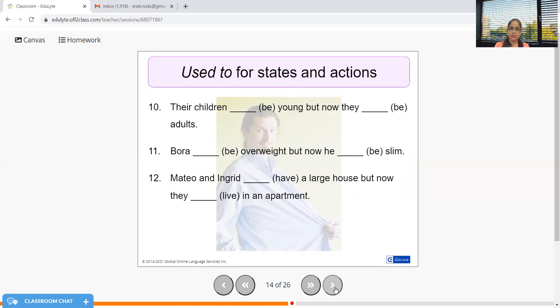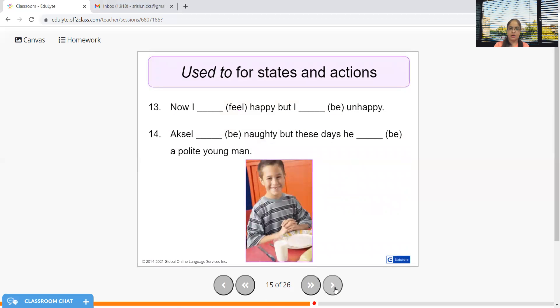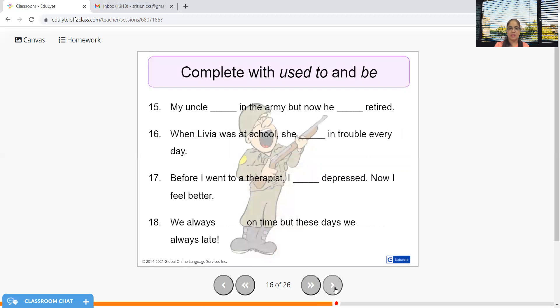Mateo and Ingrid used to have a large house but now they are living or they live in an apartment. Now I feel happy but I used to be unhappy. Axel used to be naughty but these days he is a polite young man - yes, he's improving. My uncle used to be in the army but now he is retired.